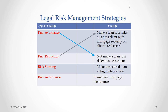In our example, the bank would decide to make a loan to that risky client but would reduce their risk by obtaining mortgage security on the client's real estate. So if the client defaulted on the loan, the bank would be able to seize that real estate and use it to help pay down the loan.